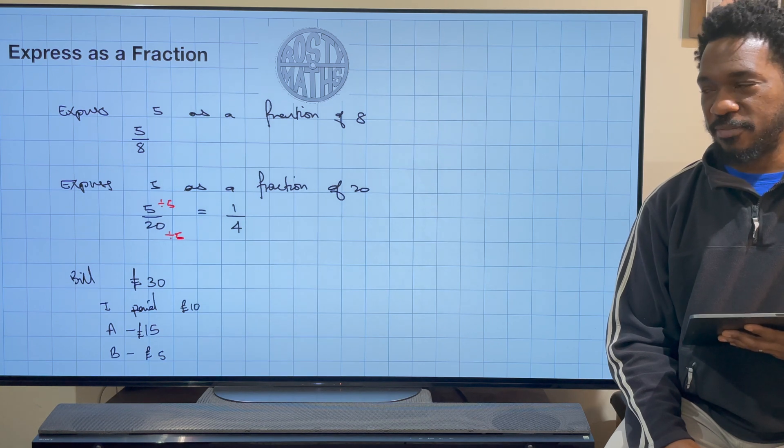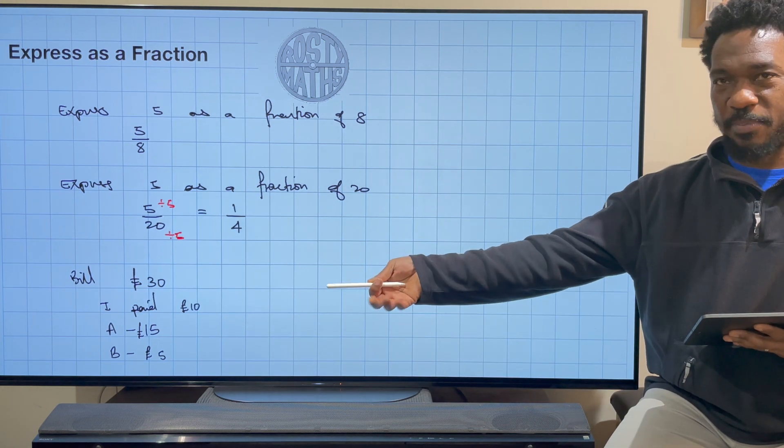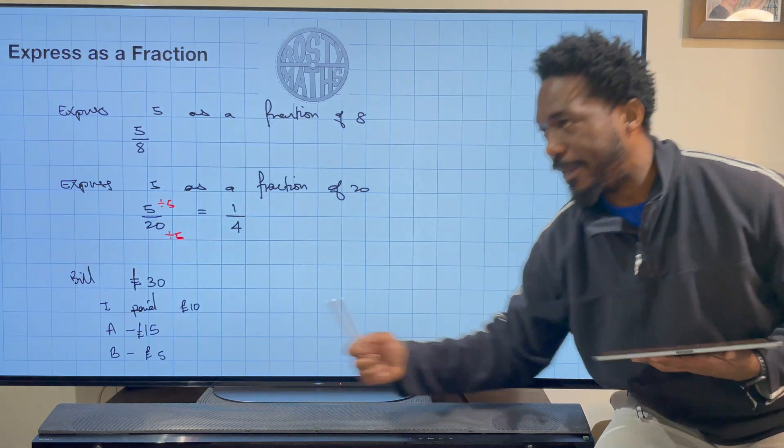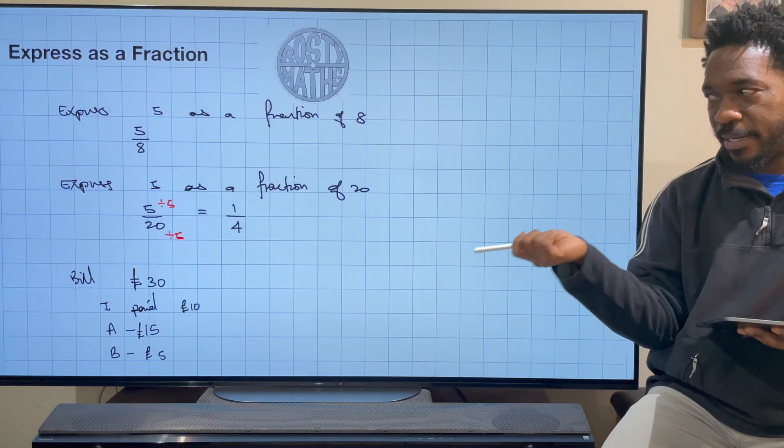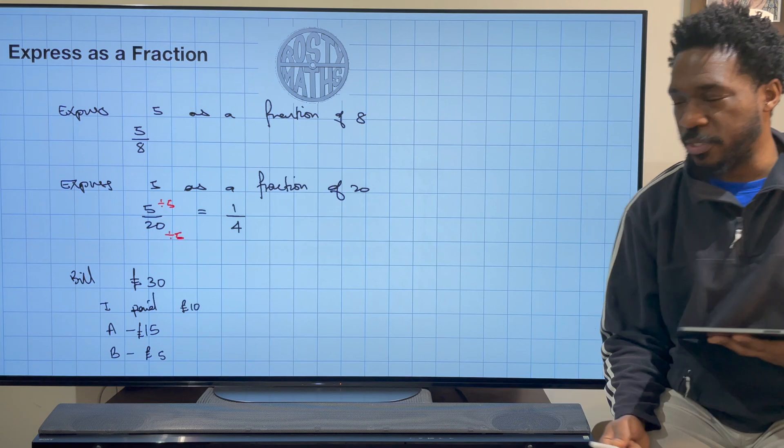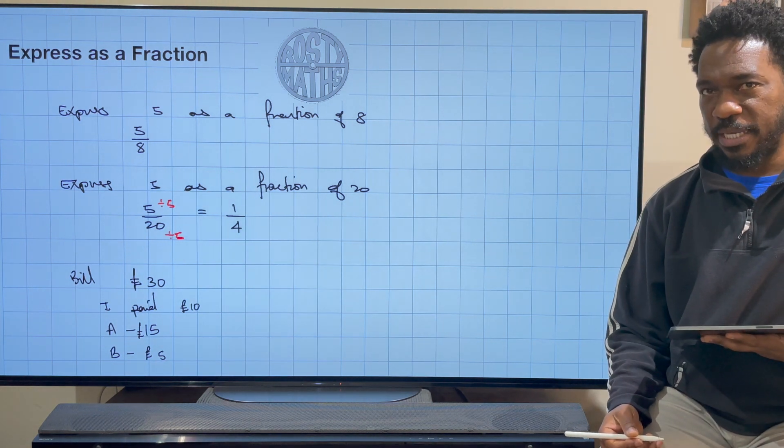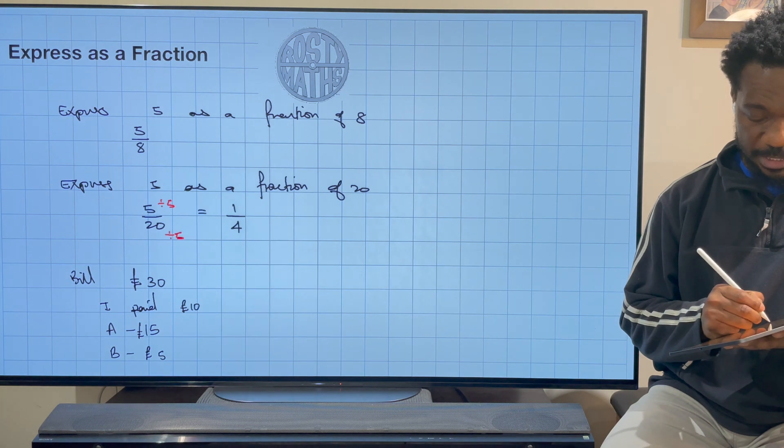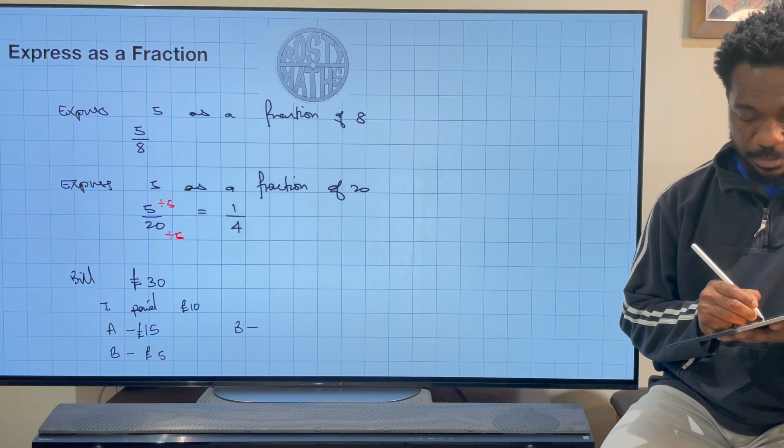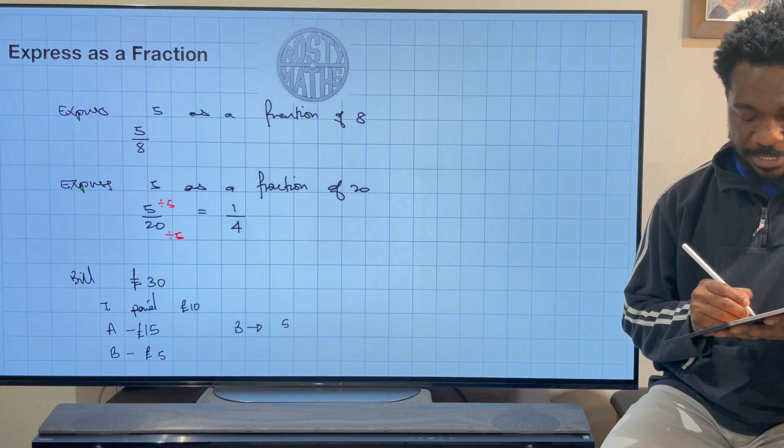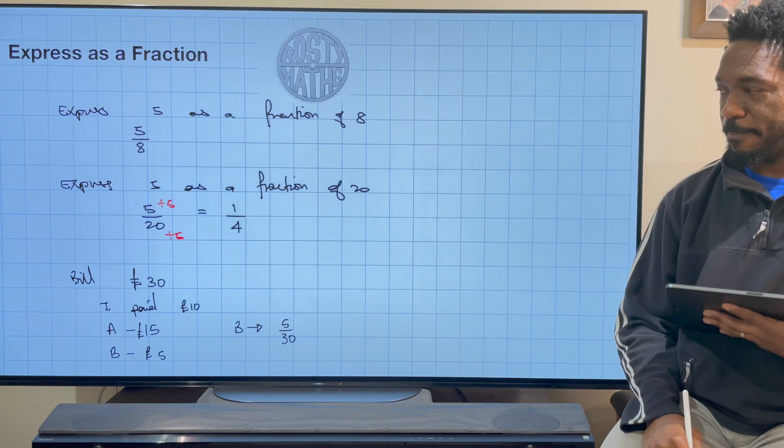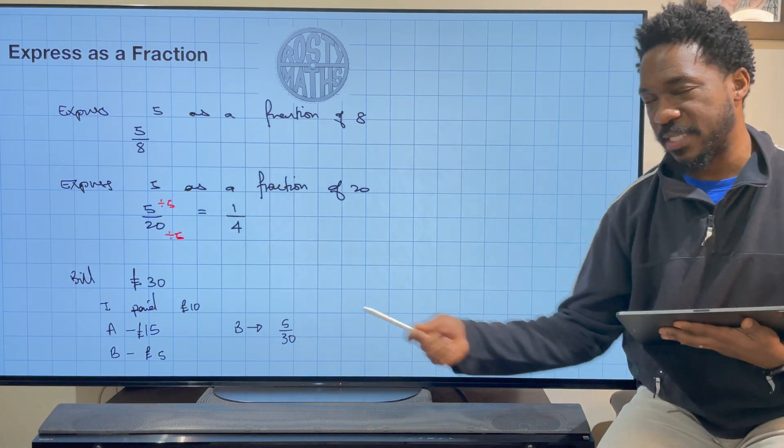So now I want to work out what fraction of the bill did friend B pay, because clearly we gotta keep an eye on this person. They're not really forthcoming with the money, are they? Anyway, what fraction of the bill did they pay? Well, friend B they paid 5 out of 30, because they paid 5 pounds but the bill was out of 30 pounds.